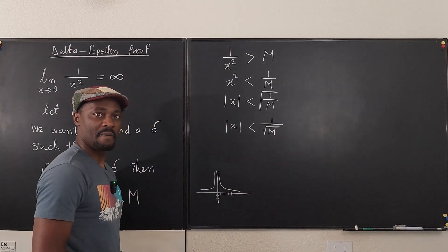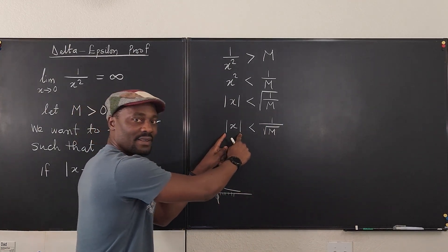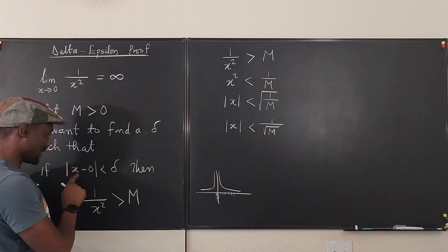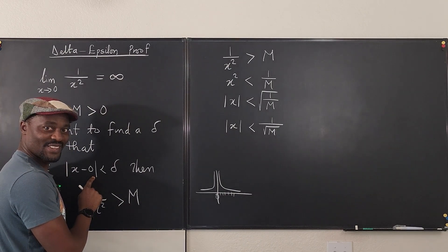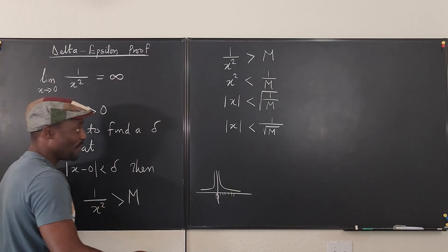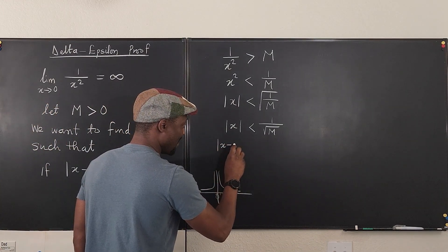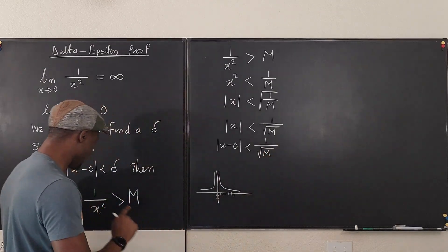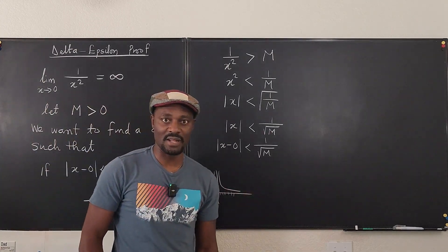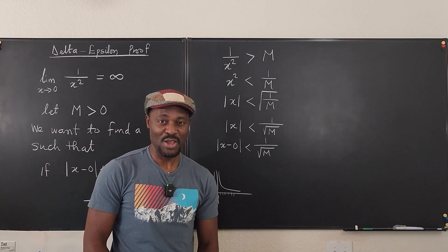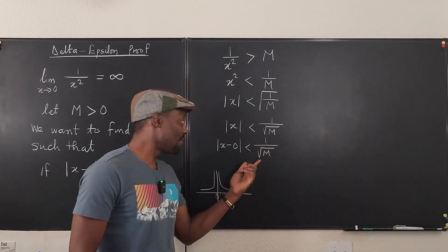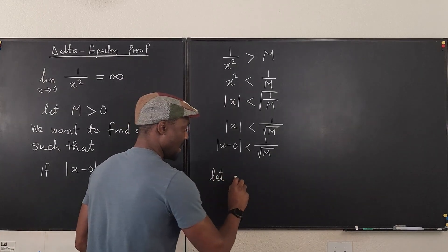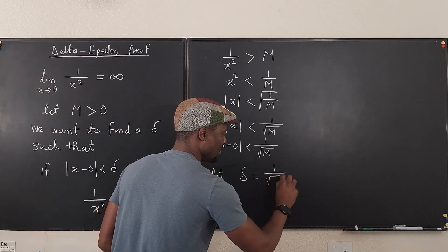I can rewrite this expression as x minus 0, so actually I can write this as the absolute value of x minus 0 is less than 1 over the square root of M. Clearly, I can claim that delta is 1 over the square root of M — that's the delta I've been looking for. There exists a delta, and once you've found a delta, you're done with your proof. Let delta be equal to 1 over the square root of M.